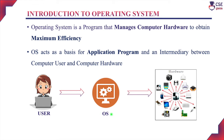The operating system controls the processor, file system, devices connected to the system, and the memory. This operating system will stop running once the system is turned off. Once the system is switched on, it manages and controls all the connected devices to that particular system and the applications run by the user.